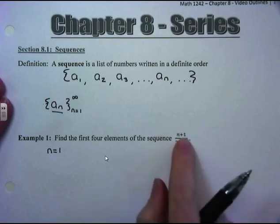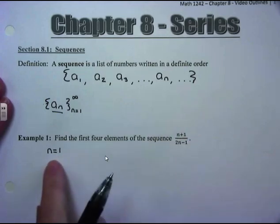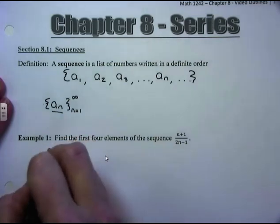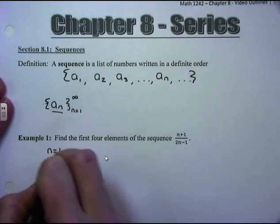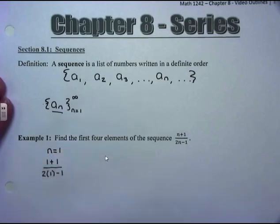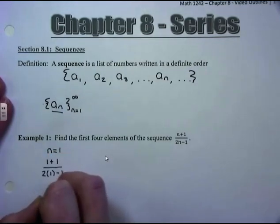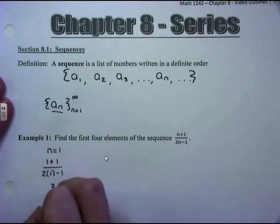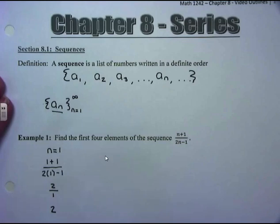We replace every n in the formula with 1. So we have (1+1)/(2×1−1). In the numerator we have 2; in the denominator we have 2−1, which is 1, meaning our first term is 2.